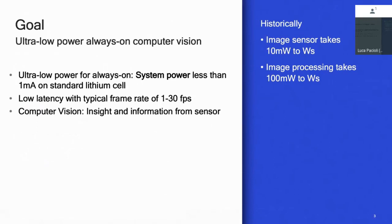We also wanted low latency on the order of about 1 to 30 frames a second, depending on the use case. The information from this computer vision is what we wanted, not necessarily the image, mainly because we're constrained on power. This is starkly different from a lot of computer vision and photography use cases. Most image sensors take on the order of hundreds of milliwatts to a watt, and the image processing — ISP, color, distortion correction — and the computer vision itself take on the order of hundreds of milliwatts to more than watts.